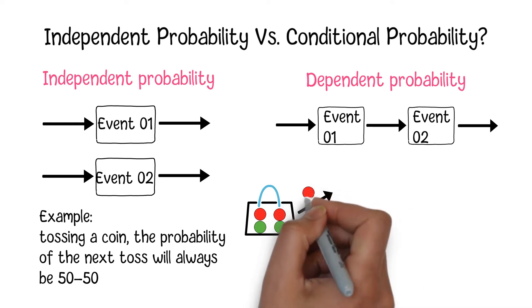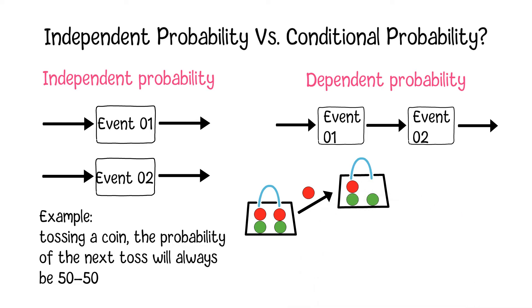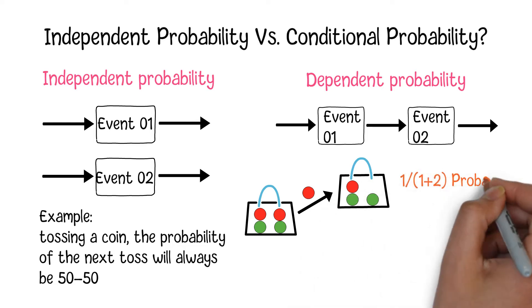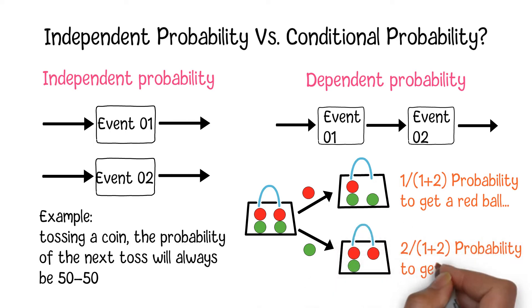If you get a red ball in the first round, there will be one red ball and two green balls in the bag. So, next time, you will have a 1/(1+2) probability to get another red ball. On the other hand, if you grab a green ball in the first round, you will have a probability of 2/(1+2) to get a red ball in the second round.